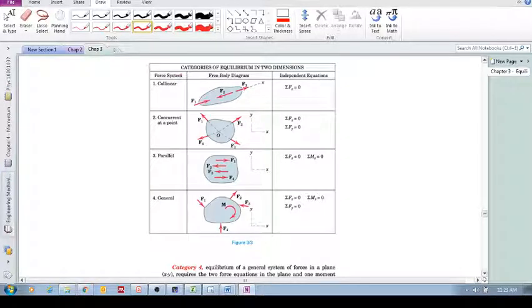So the force system, we could have a category, a system where the forces are collinear. Right? They're all lined up along one line of action. And so if this system is to be in equilibrium, all we need to do is analyze it according to this equation.